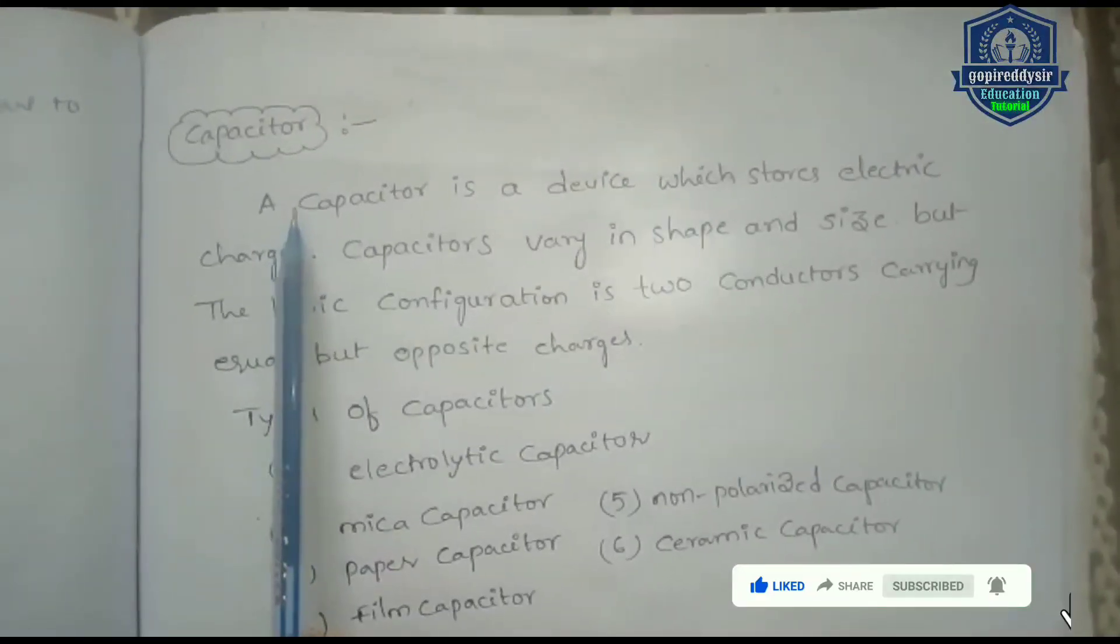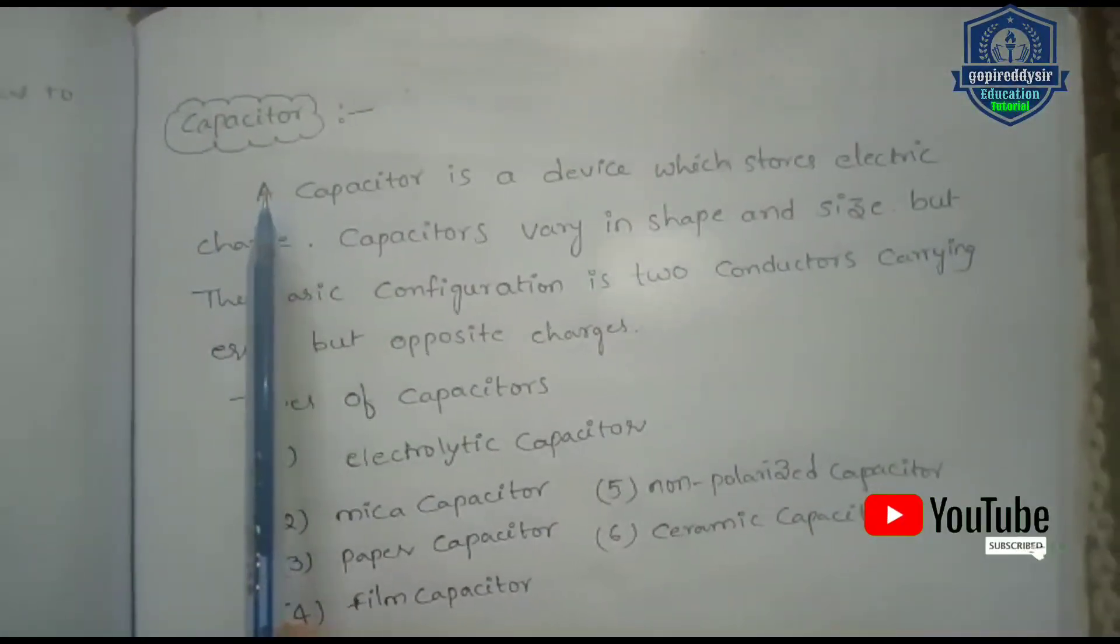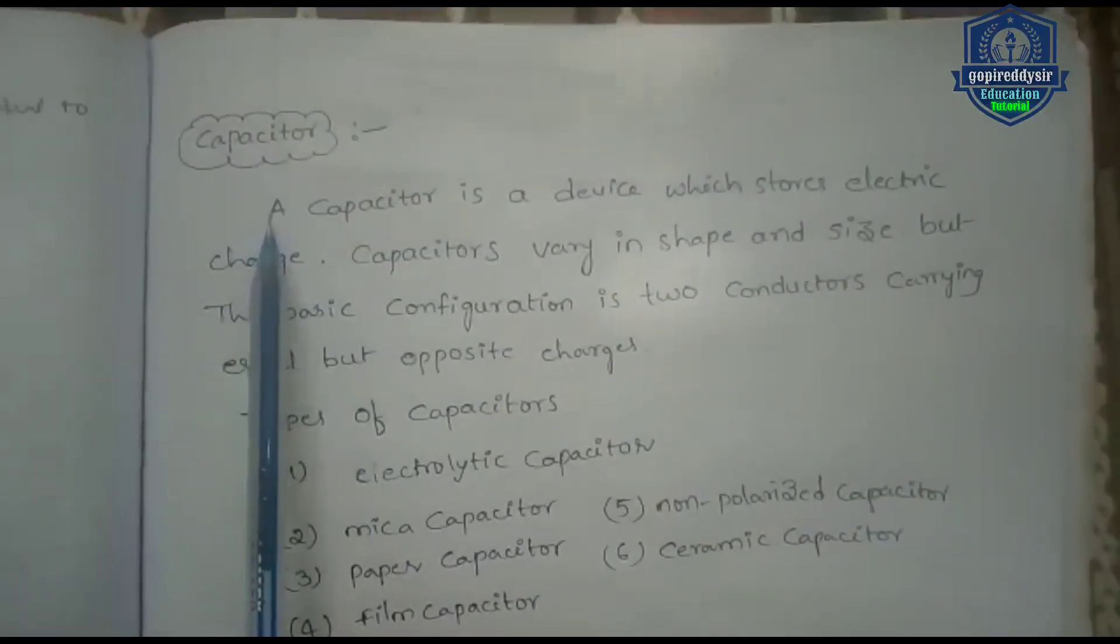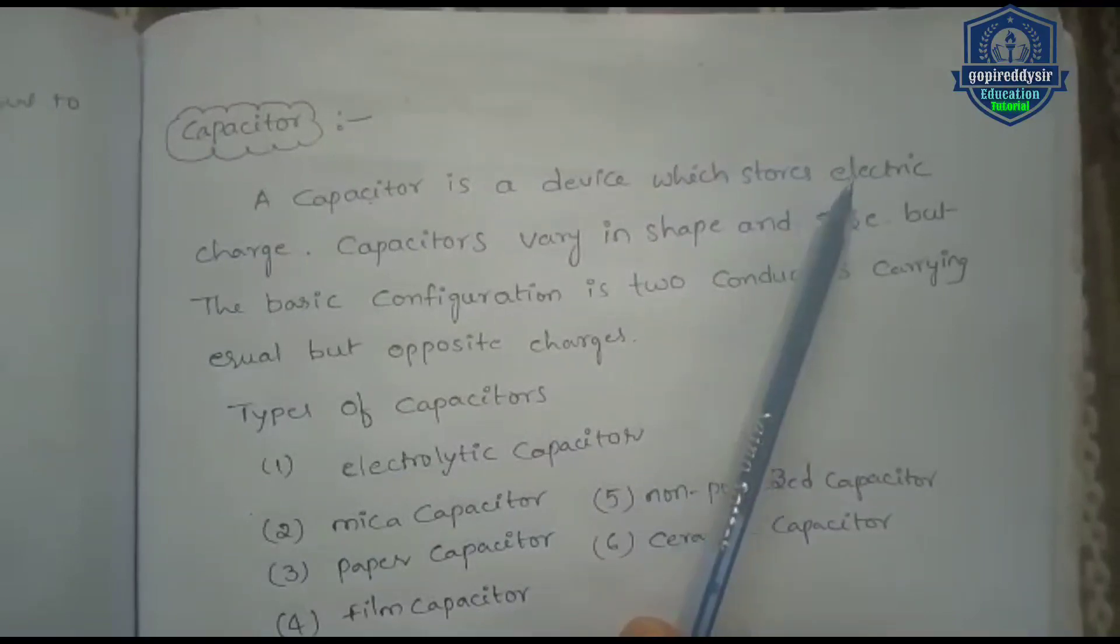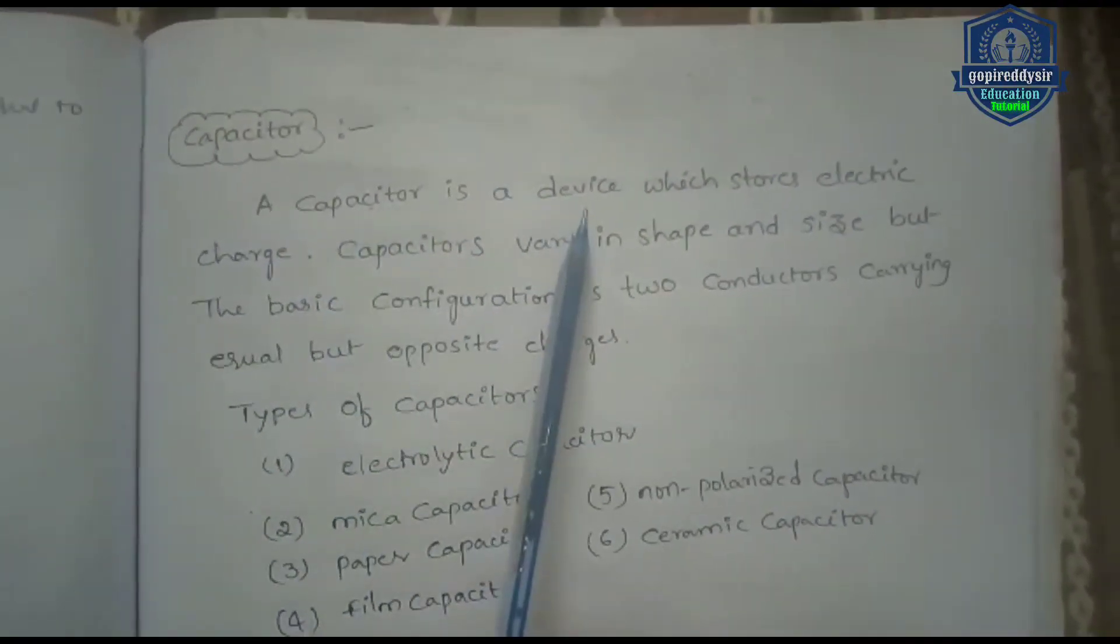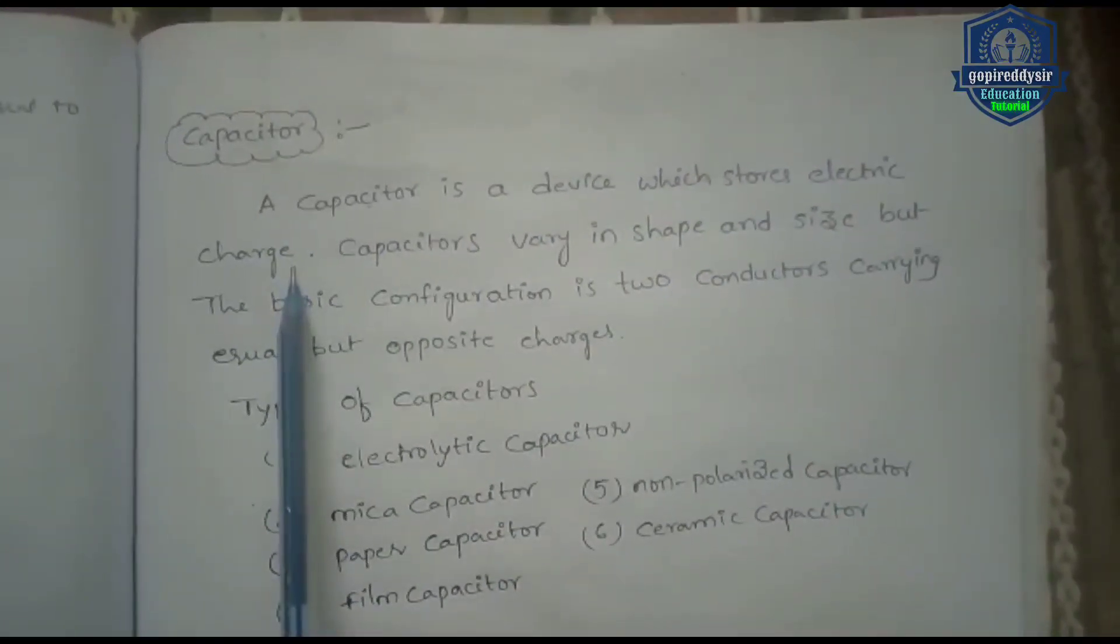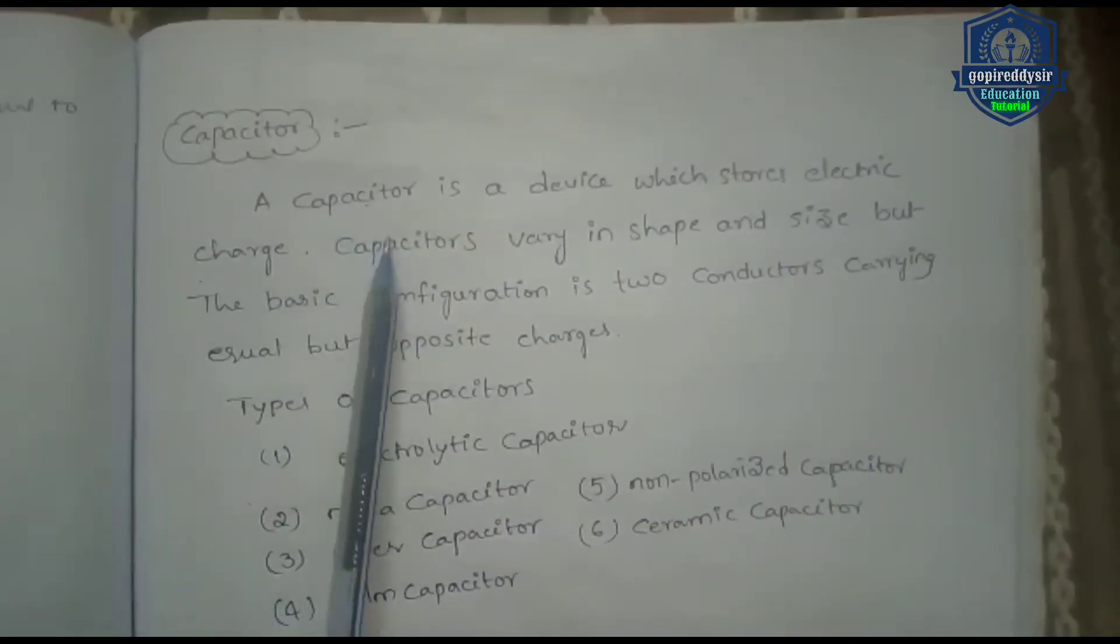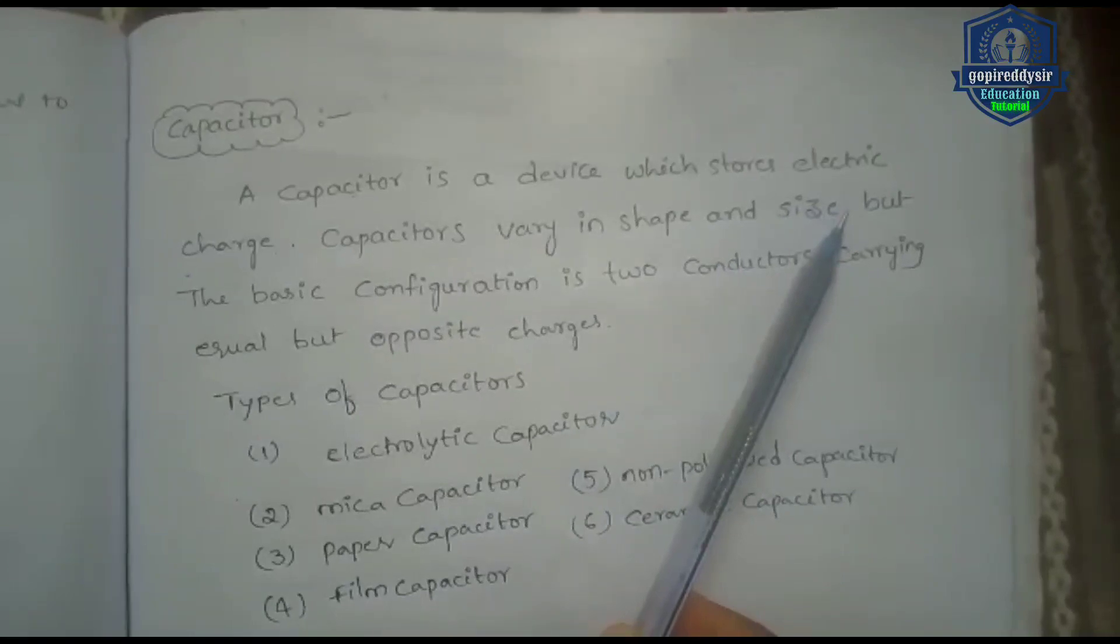We are discussing what is the capacitor and capacitance. First of all, we are discussing about the capacitor. A capacitor is a device which stores electrical charge. So capacitor is an electrical device which stores electrical charge. The electrical charge is stored in the capacitor.